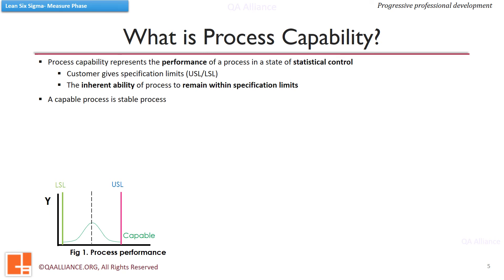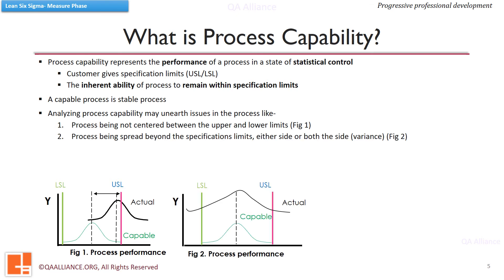That's why when we analyze process capability, we may find three kinds of issues. The figure 1 shows here that the process is not centered between the upper and lower specification limits. Second situation can be when the process spread goes beyond the specification limits due to high variance, even when it is centered.